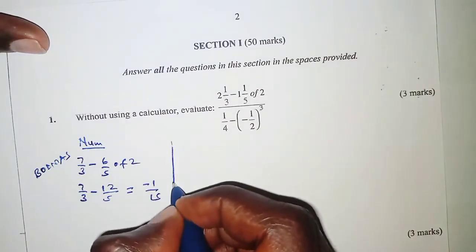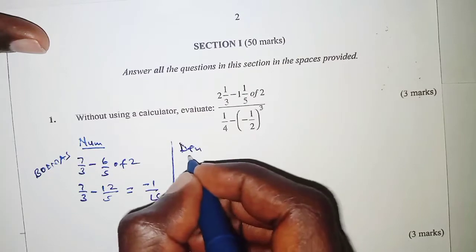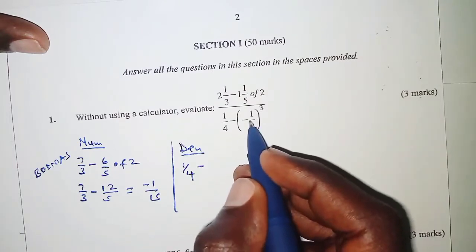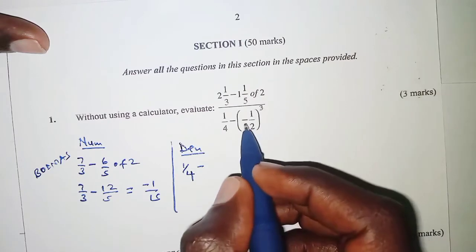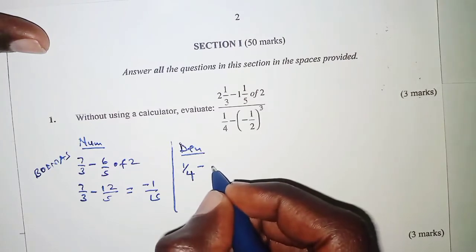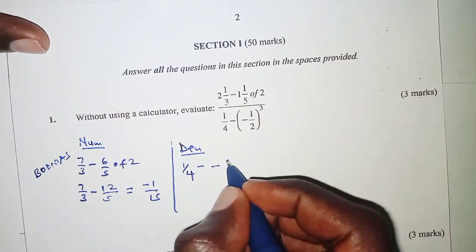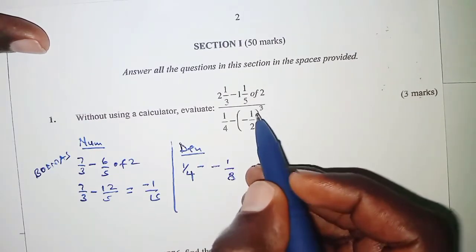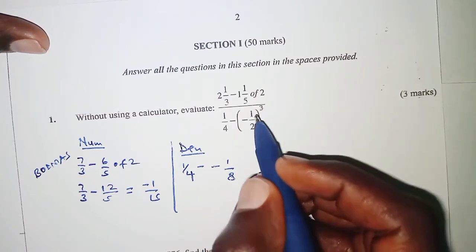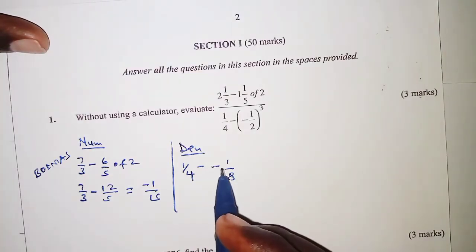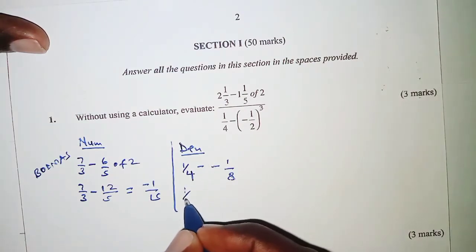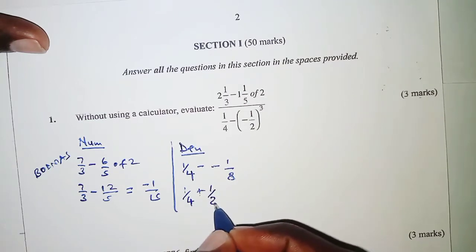Next we look at the denominator. We have a quarter minus negative 1 half raised to power 3. That means we are going to cube negative one half. Negative cubed is negative, and a half cubed is 1 over 8, so we cube the numerator and denominator — everything inside the brackets is cubed — giving negative 1 over 8.